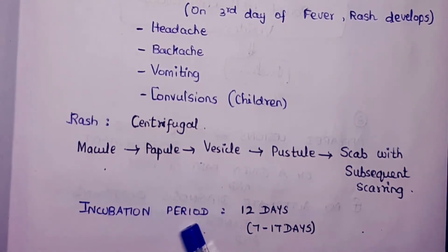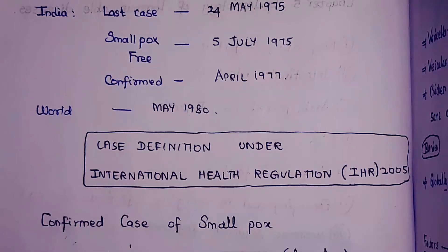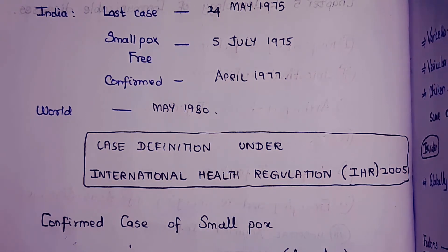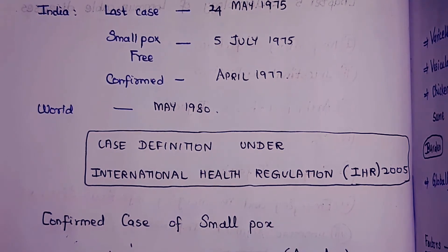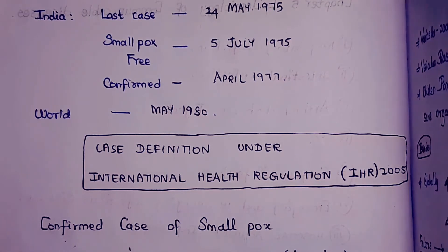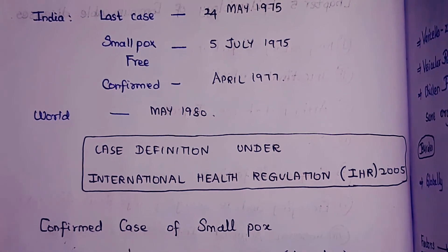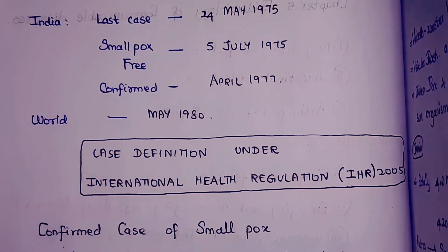The incubation period of smallpox varies from 7 to 17 days, with an average of 12 days. The last case of smallpox in India was recorded on 24th May 1975, and India was declared smallpox-free on 5th July 1975, confirmed by April 1977. Globally, smallpox eradication was confirmed in May 1980.